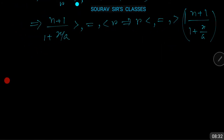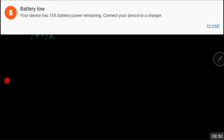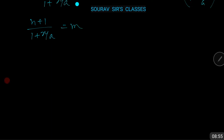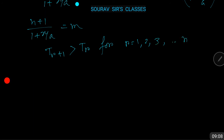Case 1: When (n + 1) / (1 + |x/a|) is an integer, let it equal m. Then from the inequality, T_{r+1} > T_r for r = 1, 2, 3, ..., m - 1, and T_{r+1} = T_r for r = m. Therefore T_2 > T_1, T_3 > T_2, ..., T_m > T_{m-1}, and T_{m+1} = T_m.